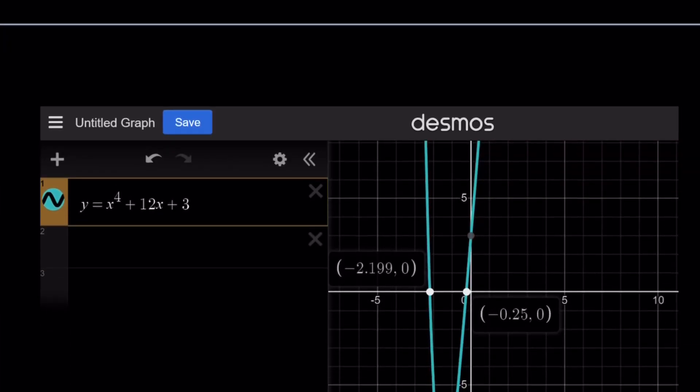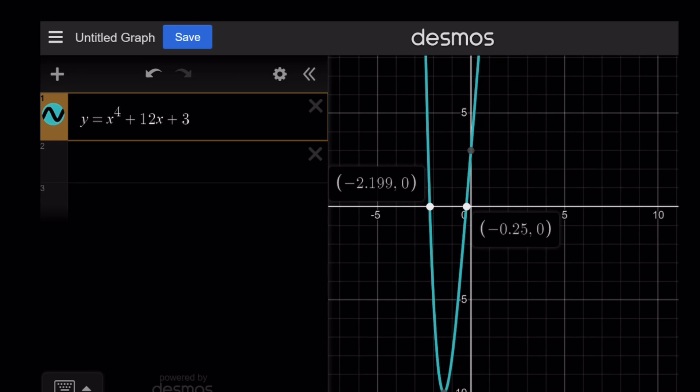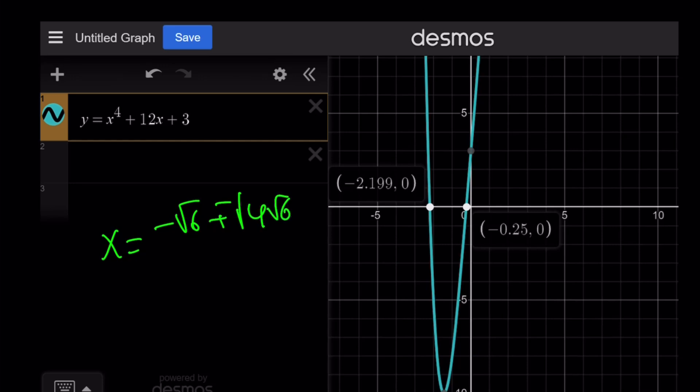Let's go ahead and take a look at the graph of this function. And here's the graph. So those are the two x values that we talked about. And remember, the solutions were negative square root of 6 plus minus the square root of 4 root 6 minus 6 all over 2. And those are the two values that we found numerically.